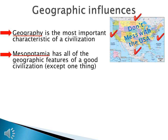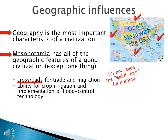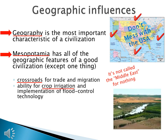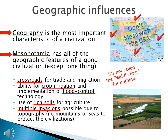Mesopotamia has all of the geographic features you would expect to find in a good civilization, except for one thing. The good things: Mesopotamia is a crossroad for trade and migration — if you are going from anywhere in the ancient world to any place else, you're probably passing through Mesopotamia. The rivers allow for crop irrigation, giving water so people can eat, and there's a surplus of agriculture. The Mesopotamians also implement flood control technology and have very rich soil, great for growing things. But there is one small problem: there are multiple invasions, made possible due to the topography — it's really easy to get into this part of the world and take it over. That's it for this lecture.